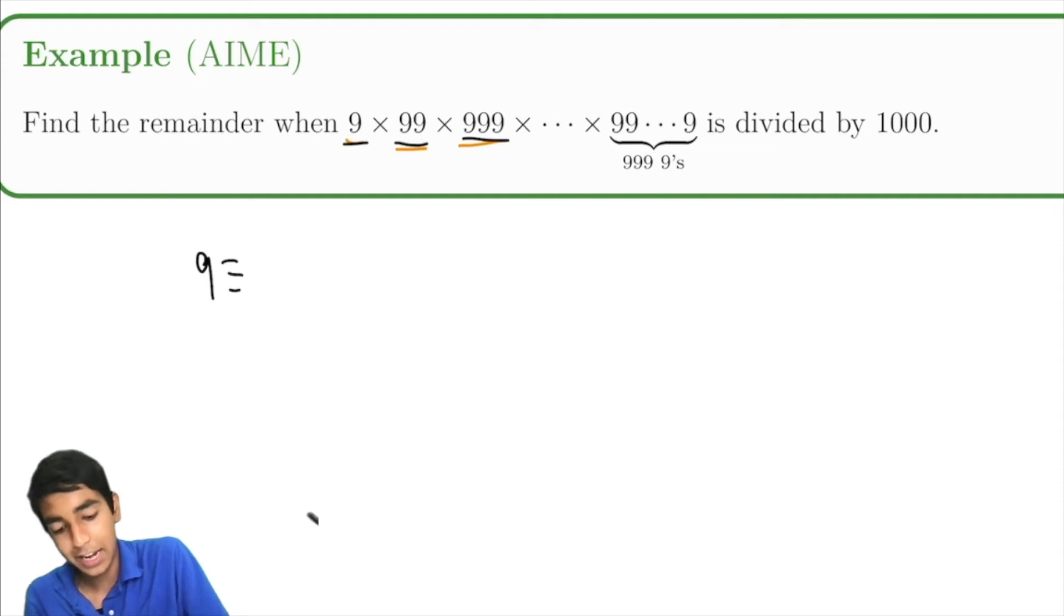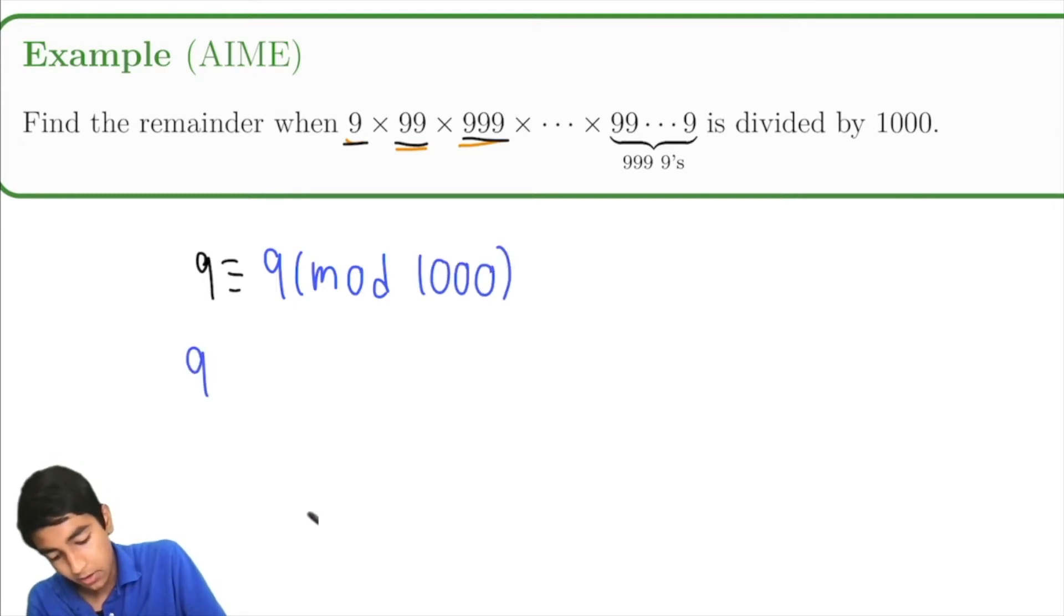By the modular arithmetic product rule, let's just find the values of all of these terms mod 1,000. So 9 is just 9 mod 1,000. 99 is 99 mod 1,000. There's nothing special about that. And now here's where things start to get interesting.